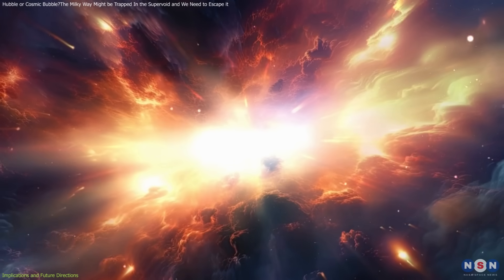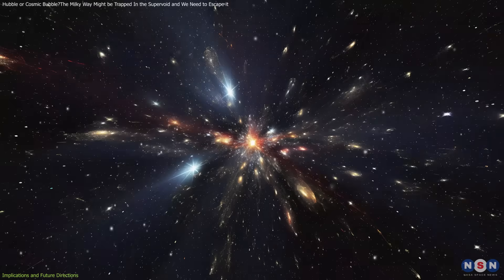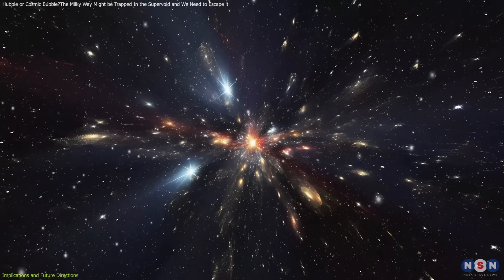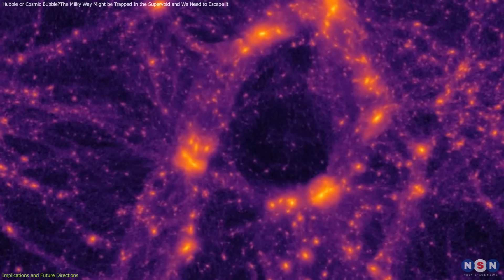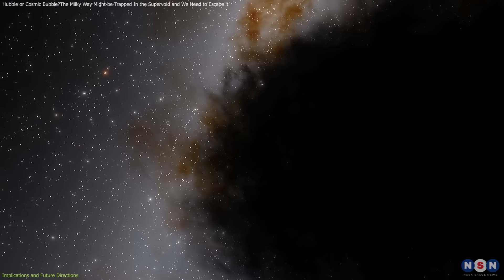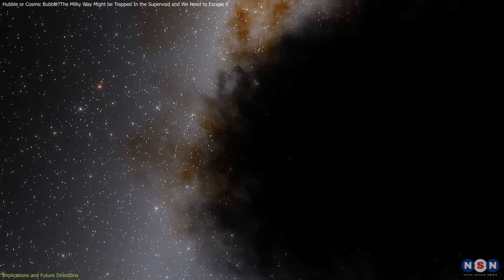Another related topic is the role of quantum fluctuations during the early universe. These fluctuations could have created uneven distributions of matter, leading to structures like supervoids. Investigating the connection between quantum processes and large-scale structures may help us understand why regions like the KBC supervoid formed in the first place.